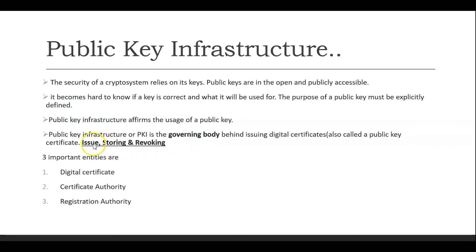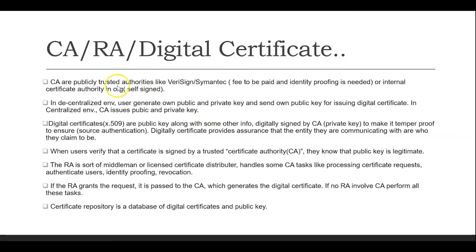The Public Key Infrastructure acts as a governing body that plays a role in issuing, storing, and revoking certificates. There are three important entities: the digital certificate, the Certificate Authority (CA), and the Registration Authority (RA). These three are tested again and again in exams. CA entities are normally publicly trusted authorities like VeriSign — you pay fees and must perform identity proofing before they issue a certificate. There can also be an internal CA inside an organization that issues self-signed certificates.